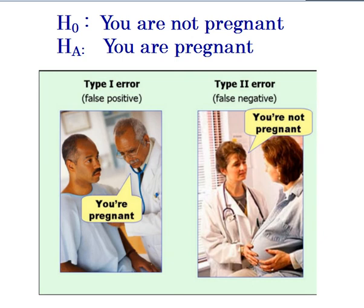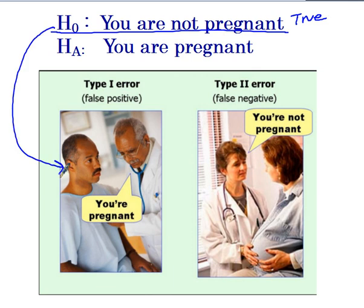A type 1 error is when we know that the null is true. So we're claiming that this is true: you are not pregnant. I know earlier I mentioned we don't really want to use true or false too often, but here I will. We know this is true — you are not pregnant. If I look at this guy, this guy is not pregnant; he's a guy, he's not going to be pregnant. But now we have this doctor telling him, 'you're pregnant.' So this doctor is taking a true null and rejecting a true null. That is a type 1 error — when we know the null is true and we reject the true null.